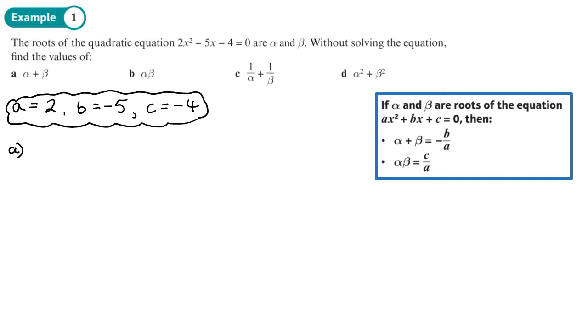Part A, alpha plus beta. That's negative B over A. So that's negative of negative 5 over 2, which is 5 over 2.